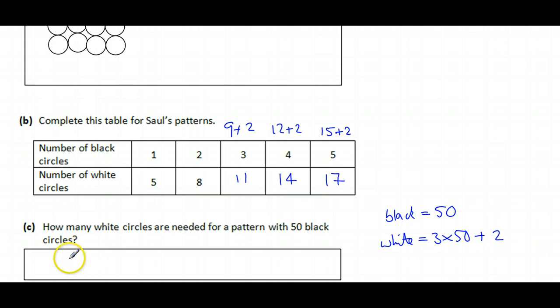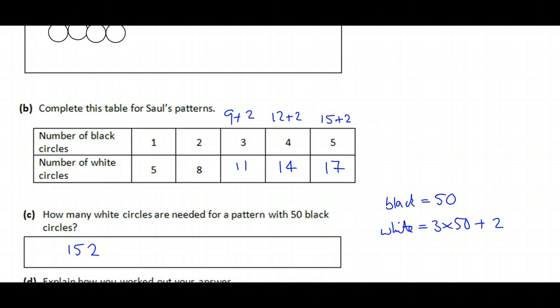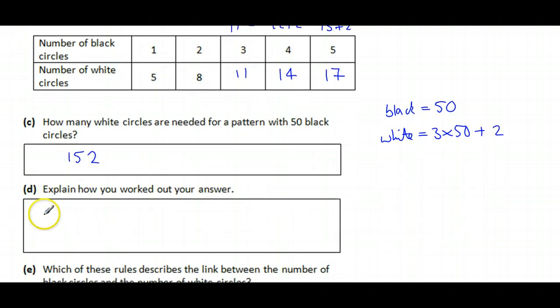Well, explain how we worked out the answer. There was one row of 50 black circles, so that means there's three rows of 50 white, which is three times 50, which is 150, plus the two extra, the arms I call them, white circles is equal to 150 plus 2.